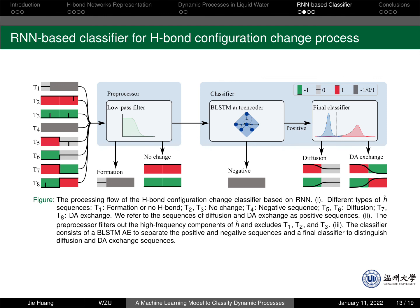This figure illustrates the processing flow of our RNN-based classifier. T1 to T8 indicates different types of sequences, and T5 to T8 are those types of sequences we really care about. In the pre-procedure, we filter out the formation sequences and the no-change sequences. For convenience, we call diffusion process and DA-exchange process as positive sequences, and all other sequences called negative sequences.